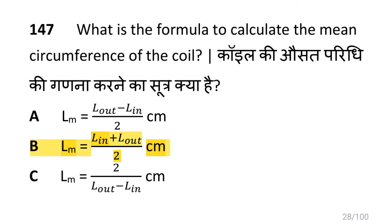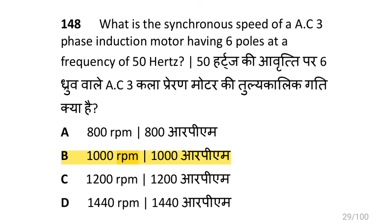The formula to calculate the mean circumference of a coil is: L_min equals (L_in plus L_out) divided by 2 cm. The synchronous speed of an AC three phase induction motor having six poles at 50 Hz is calculated using N equals 120F divided by P, giving 1000 RPM.